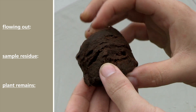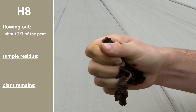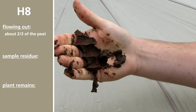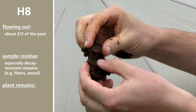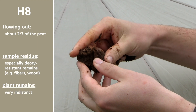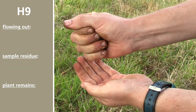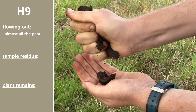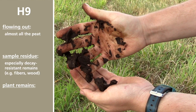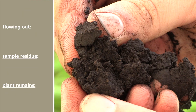Now we'll jump ahead to H8. In this category, about two-thirds of the peat comes out through the fingers. The sample residue now mainly consists of especially decay-resistant remains, but the plant remains in the peat material are already very indistinct. This is a typical black peat. At H9, almost all of the peat is squeezed through. The sample residue is similar, but the plant remains are now hardly recognizable. Finally, if all of the peat can be squeezed out and the plant remains are completely unrecognizable, we will have an H10.